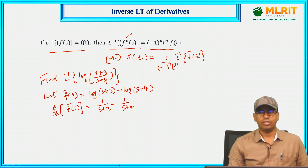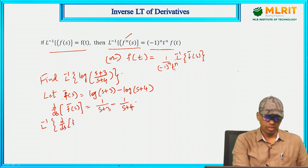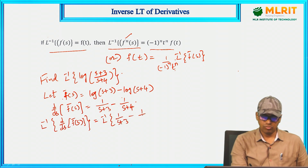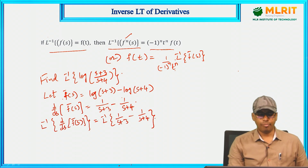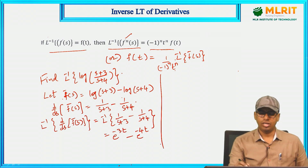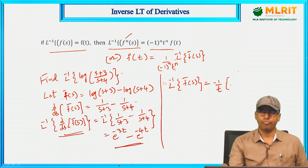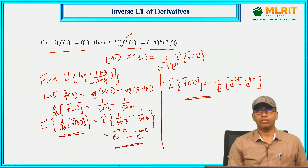First identify f̄(s), then differentiate with respect to s. Now apply L inverse of d/ds of f̄(s), which equals L inverse of [1/(s+3) − 1/(s+4)] = e^(−3t) − e^(−4t). Therefore, L inverse of f̄(s) = (−1/t) · (e^(−3t) − e^(−4t)). This is how we find L inverse using derivatives.